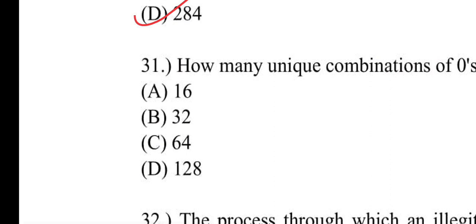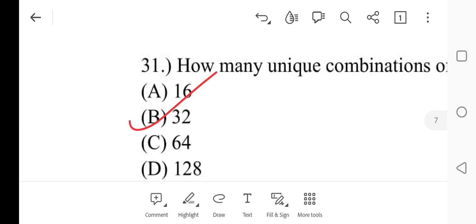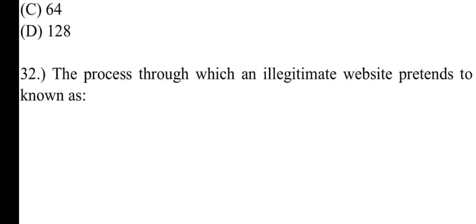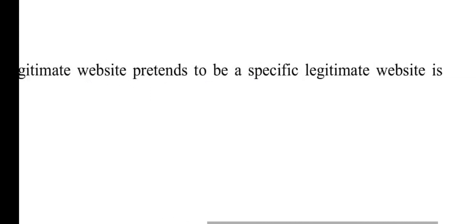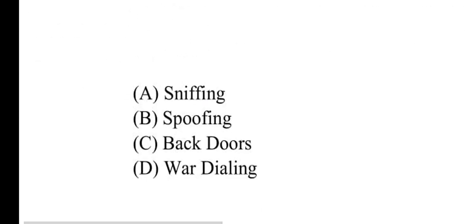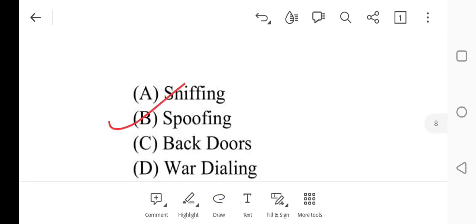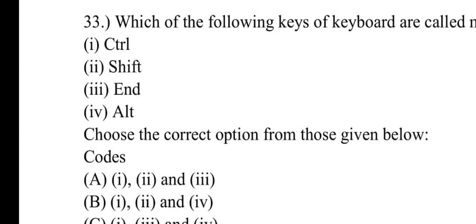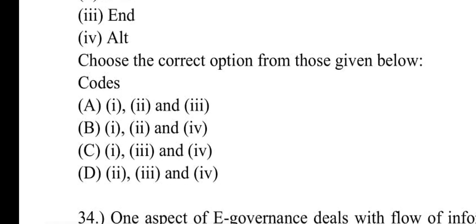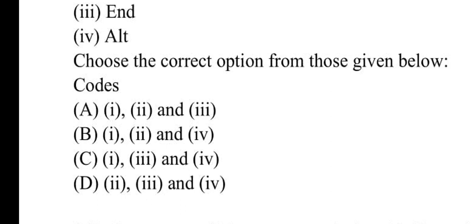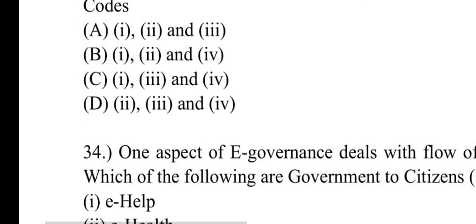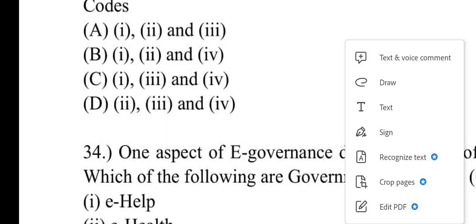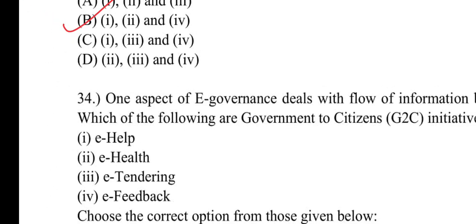Number thirty-one: How many unique combinations of zeros and ones can be made with five binary digit code? Options are 16, 32, 64, 128. Number B: 32 will be correct. Number thirty-two: The process through which an illegitimate website pretends to be a specific legitimate website is known as what? Number B: spoofing will be correct. Number thirty-three: Which of the following keys of keyboard are called modifier keys? Options are Control, Shift, End, Alt. Number B: 1, 2, and 4 will be correct, which are Control, Shift, and Alt.